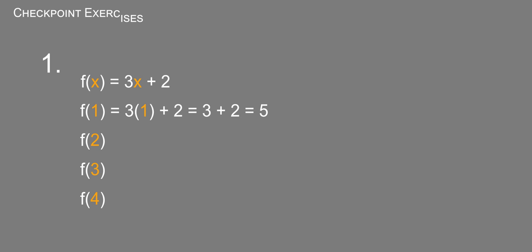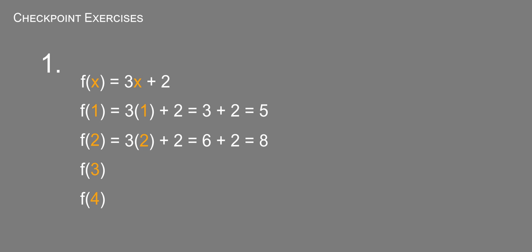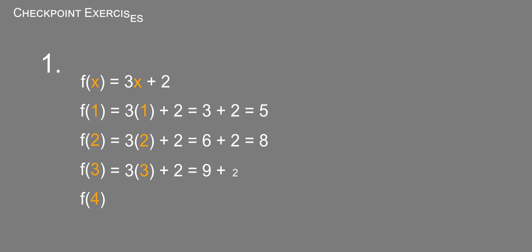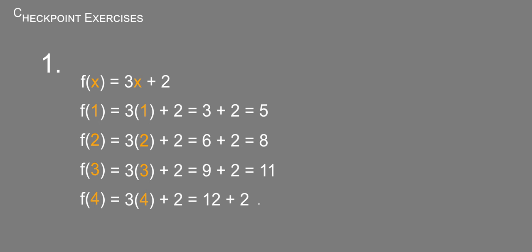f of 2: 3 times 2 plus 2, which equals 6 plus 2, which equals 8. f of 3: 3 times 3 plus 2, which equals 9 plus 2, which equals 11. And f of 4 equals 3 times 4 plus 2, which equals 12 plus 2, which equals 14.